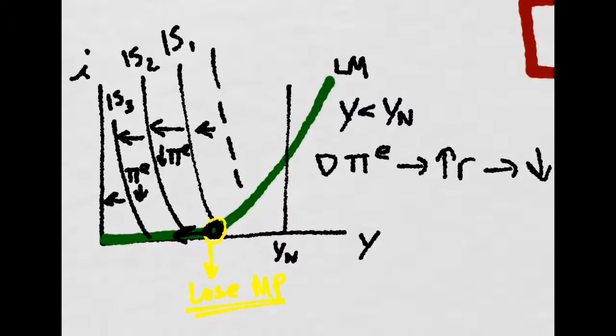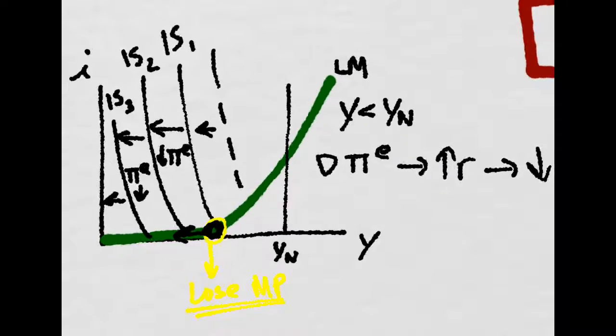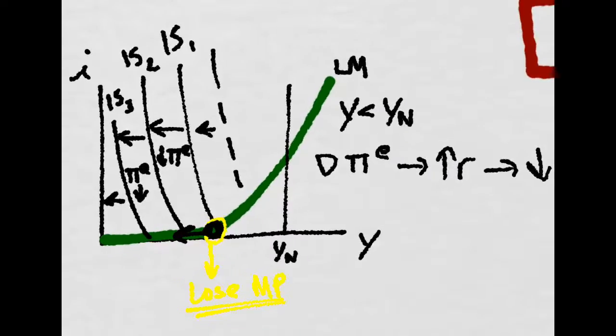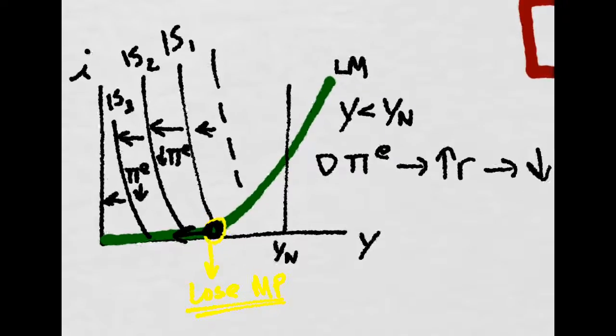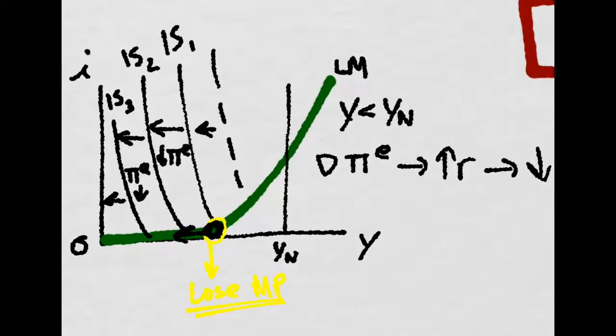That is, we cannot affect output using monetary policy because we are at a zero lower bound at the nominal interest rate equal to zero percent.